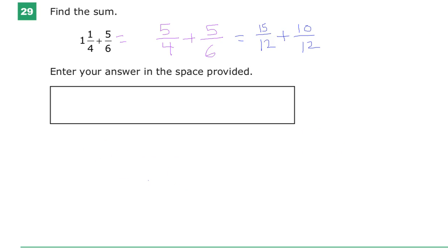Anyway, so I do have a common denominator now, so I can just add numerators. Keep my 12. So I have 12. And then 15 plus 10 is, of course, 25. There's a couple ways I can go about doing this. 25 over 12, because it doesn't say anything about what's an acceptable answer.